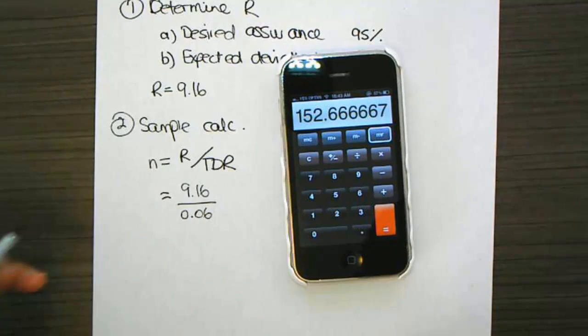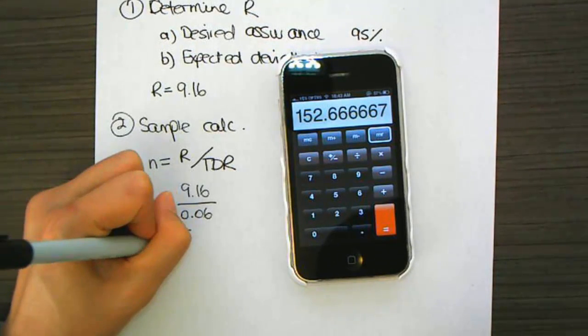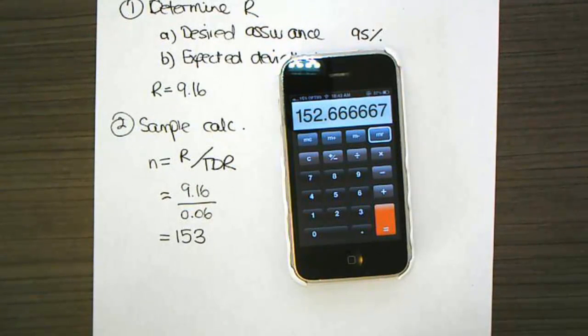Based on a situation where I want to be 95% sure, I'm expecting 4 deviations, and my tolerable deviation rate is 6%.